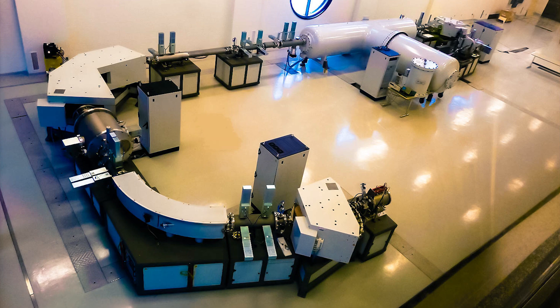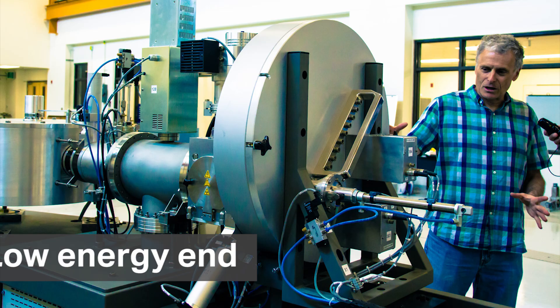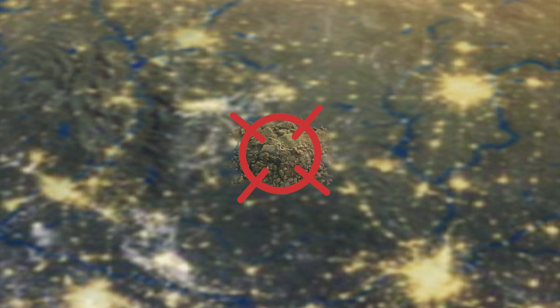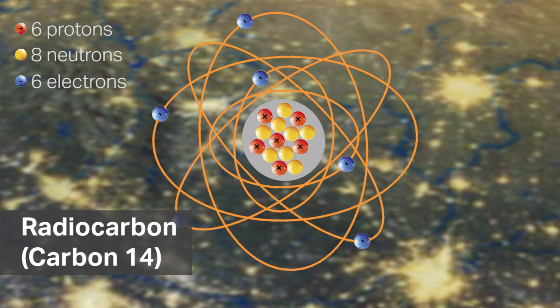The AMF itself, an accelerator mass spectrometer, has really three components. One is called the low energy end. Let's take the example of carbon. Radiocarbon is present in the environment at one million millionths of an atom, so it's a very, very trace isotope.